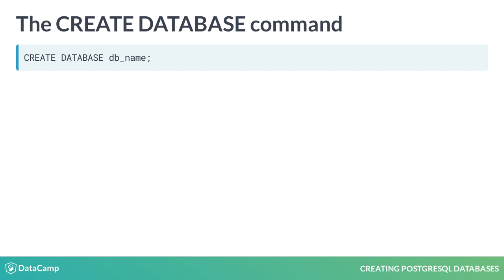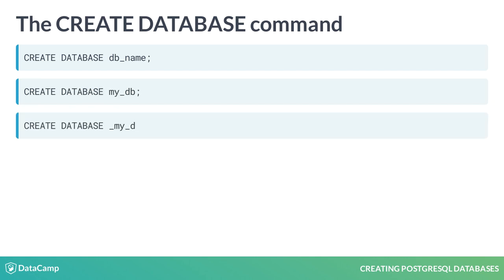DB_name represents the name of the database that we are creating. By default, database names cannot be longer than 31 characters and must start with a letter or underscore, like these examples show. However, database names cannot start with numbers, like this.